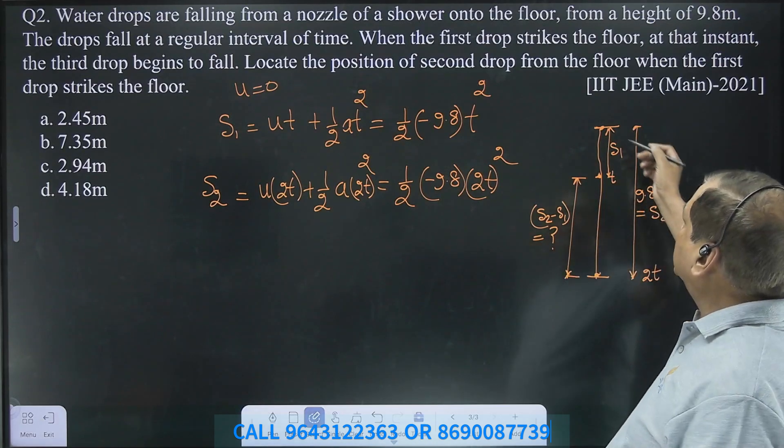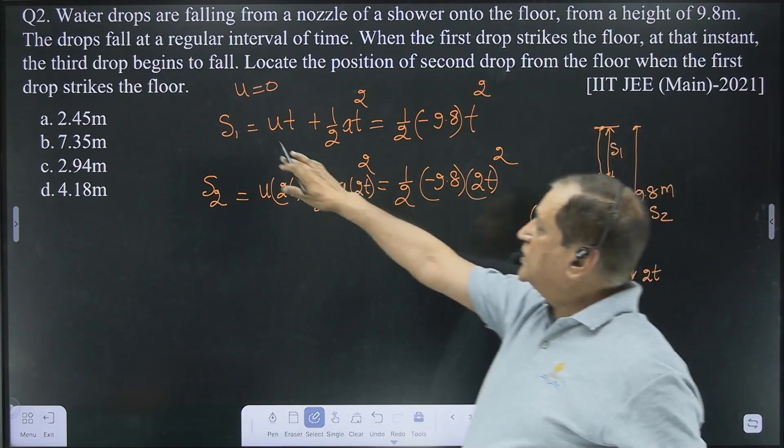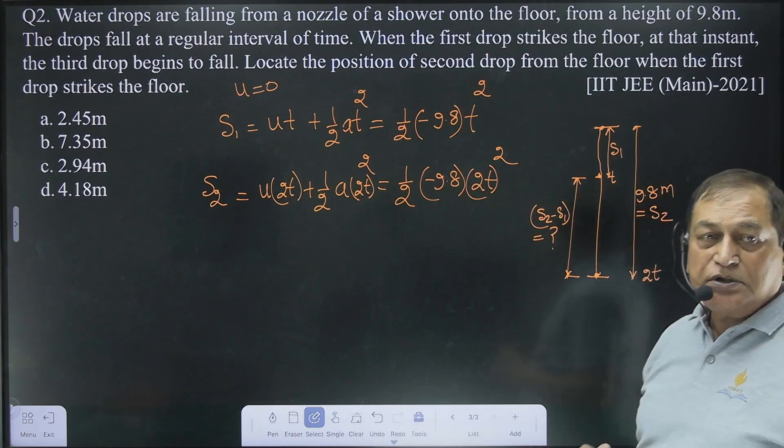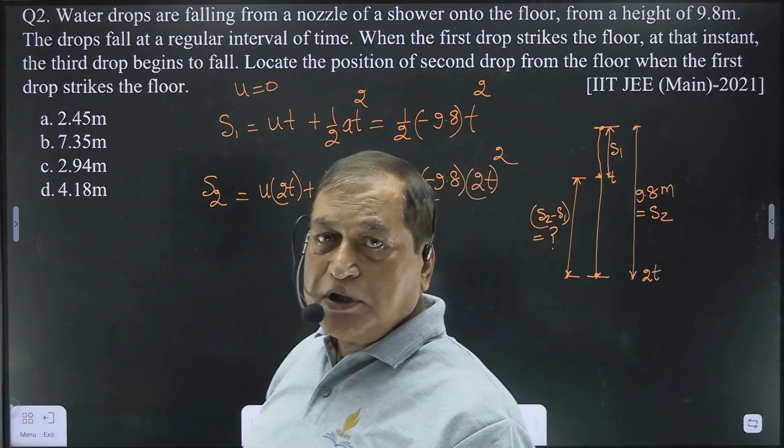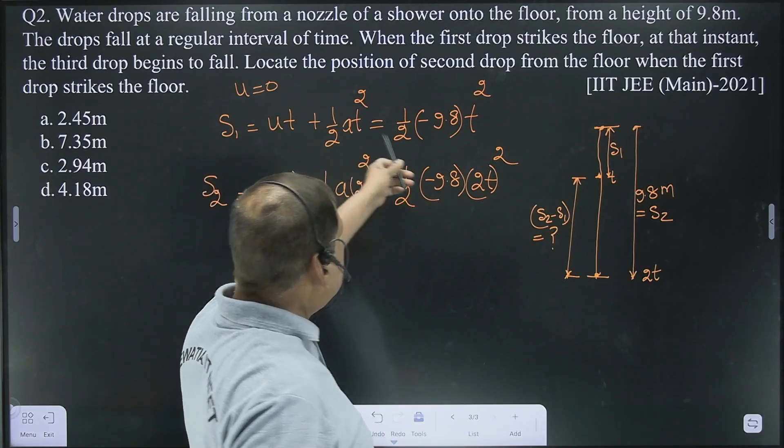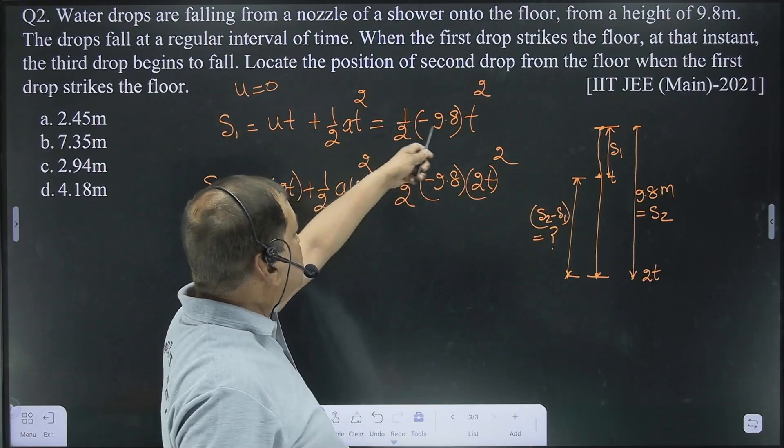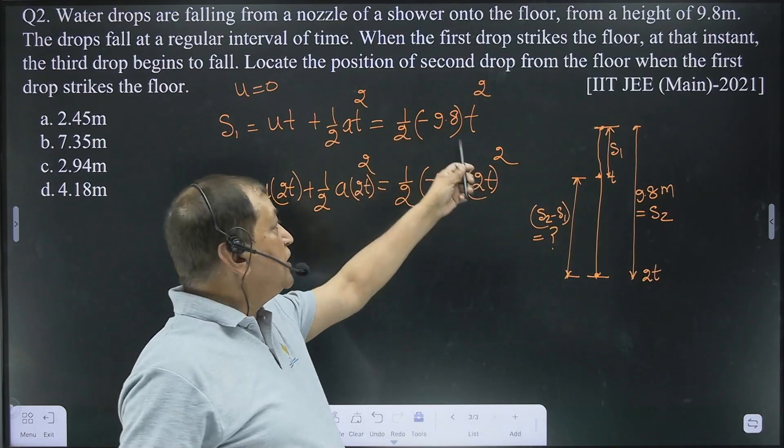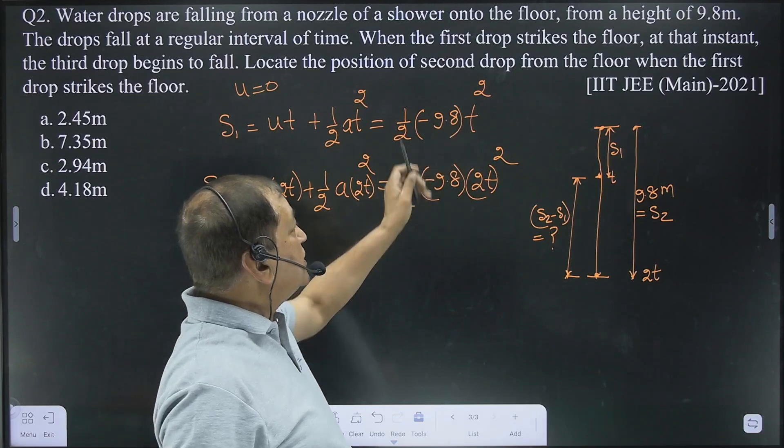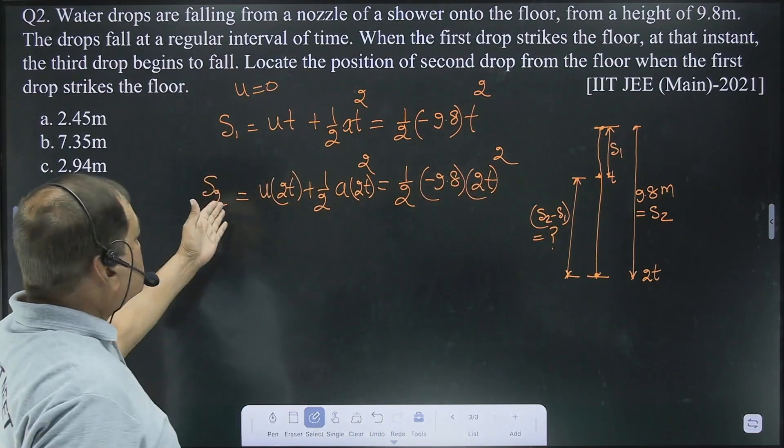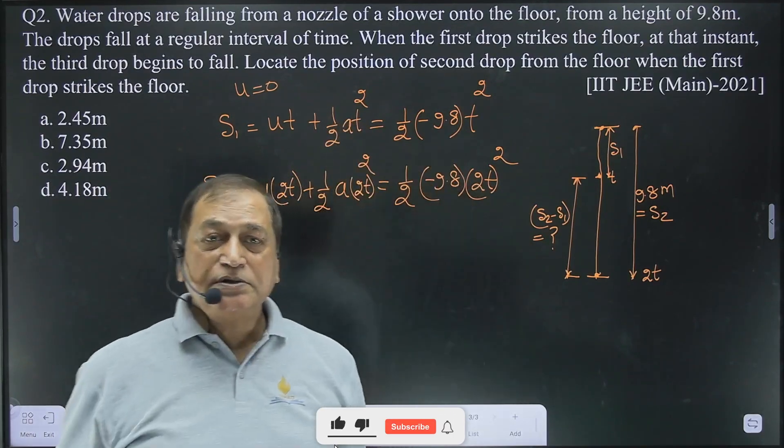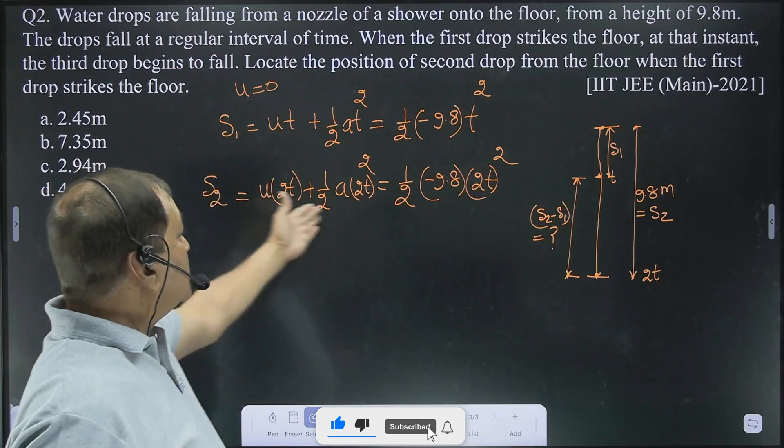So it's very simple, initial velocity is 0. We take S1 in time t, suppose this time is t, so this time will be 2t, because intervals are regular. So this time is t, S1 equals ut plus half a t square. u is 0, so it becomes half a t square, half minus 9.8 t square. Again S2, u into 2t, simply substitute 2t instead of t.